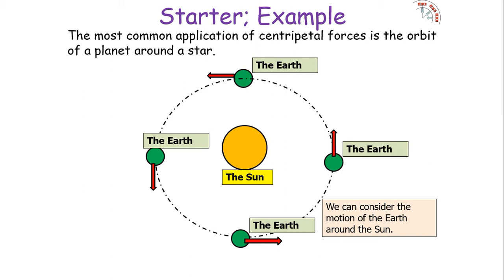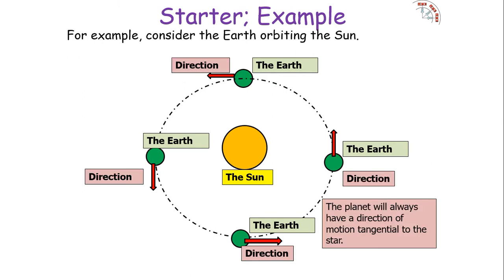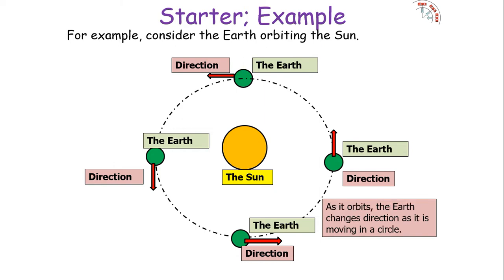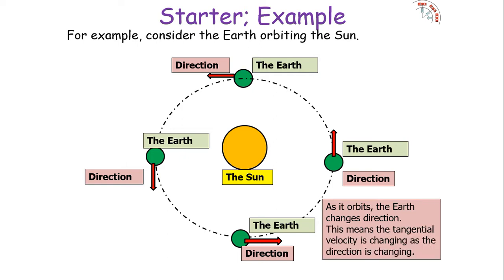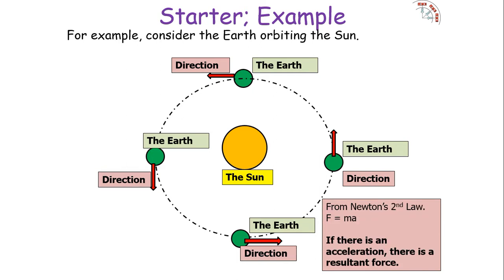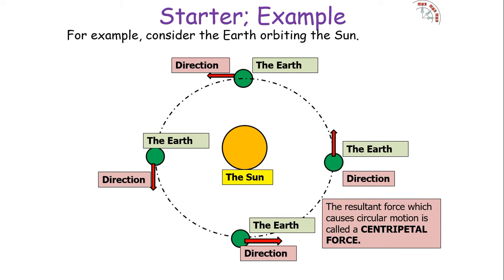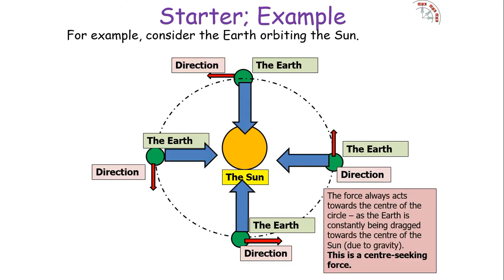Consider the motion of the Earth around the Sun. The planet will always have a direction of motion tangential to the star, meaning that as the Earth orbits it changes direction, moving in a circle. This means the tangential velocity is always changing in direction, so the orbiting body is accelerating. From Newton's second law of motion, if there is an acceleration there must be a resultant force — the acceleration and this resulting force are directly proportional — and this resultant force causes circular motion: our centripetal force.